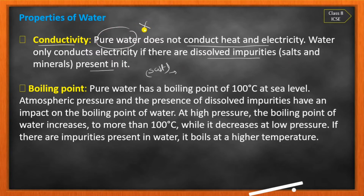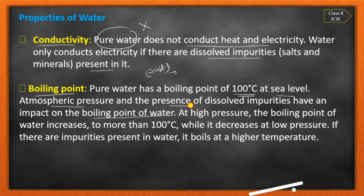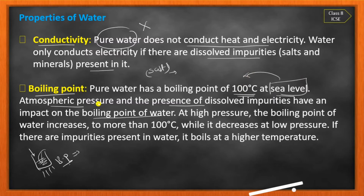Next property is the boiling point. Pure water has a boiling point of 100 degrees Celsius at sea level atmospheric pressure. The presence of dissolved impurities and atmospheric pressure have an impact on the boiling point of water. At high pressure, the boiling point of water increases — if pressure is more, boiling point goes above 100 degrees Celsius.